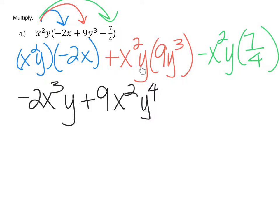For the last term, bring the 7/4 coefficient in front of the variables, so it's -7/4, then rewrite the variables x²y.